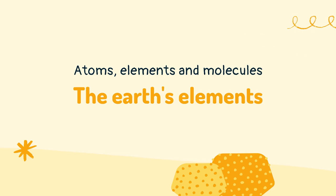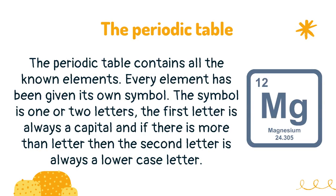The earth's elements. The periodic table contains all the known elements. Every element has been given its own symbol. The symbol is one or two letters. The first letter is always a capital, and if there is more than one letter, then the second letter is always a lowercase letter.